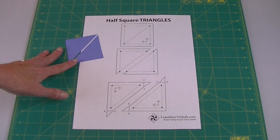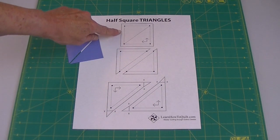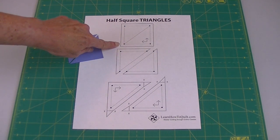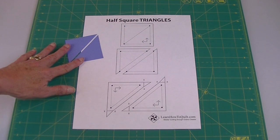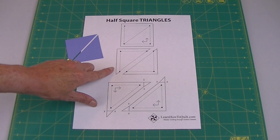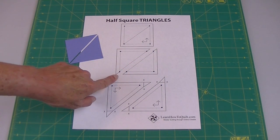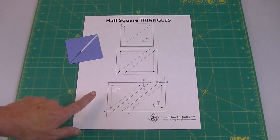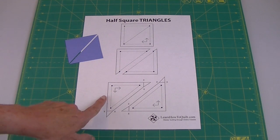If you take your square and you add a quarter inch seam all the way around and then you cut it in half on the diagonal, you'll see that this center part doesn't have any seam allowance.